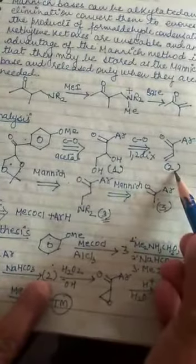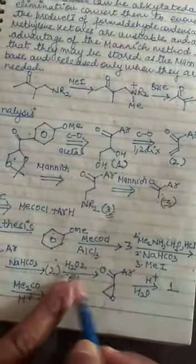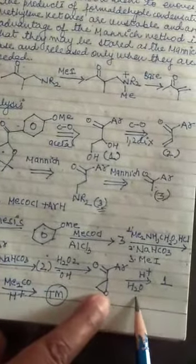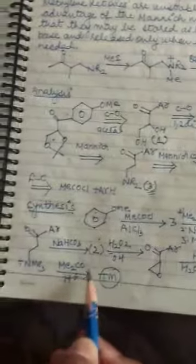We will be getting compound 2. Then we will be doing the reaction with hydrogen peroxide. Will be getting the epoxide. Hydrolysis of this will give us the compound 1. And further when the reaction will be done with Me2CO.